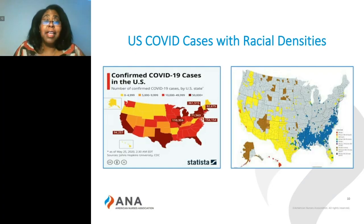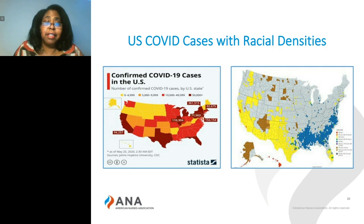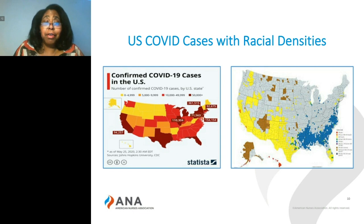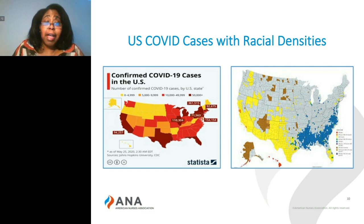What we have seen so far is that the U.S. COVID case rates specifically has affected those in higher racial densities in the United States. For example, on the map on the left, we see the higher incidence of COVID cases along the South and Southeastern states, which corresponds to what we see on the right as the number of cases and number of African Americans that live in the South and Southeastern portion of the United States.